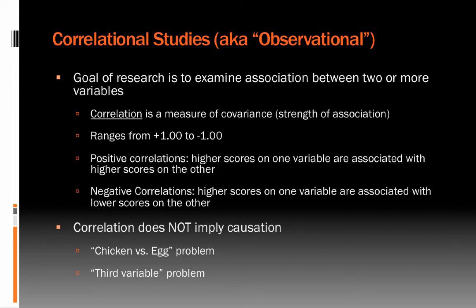Another type of research design frequently used are correlational studies, sometimes called observational studies. The goal is usually to examine the association between two or more variables, with correlation as the statistic used. Correlation ranges from positive 1.0 to negative 1.0, with larger numbers indicating a stronger association. Positive correlations mean higher scores on one variable are associated with higher scores on the other — for example, physical activity and fruit and vegetable consumption being positively correlated.